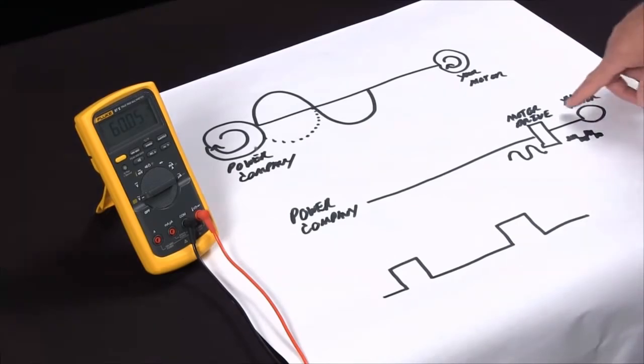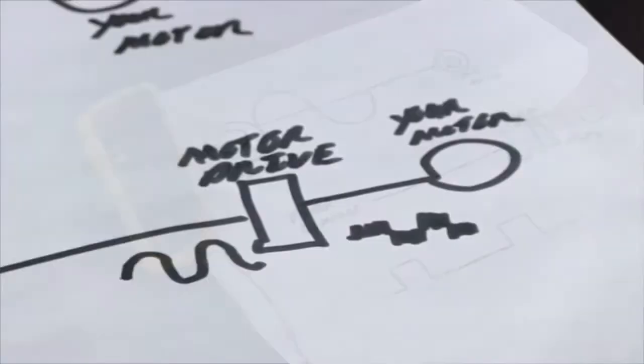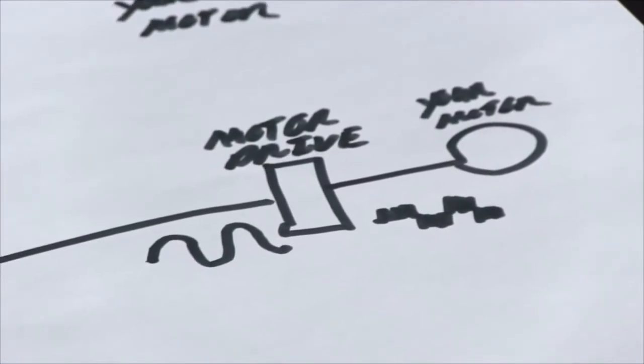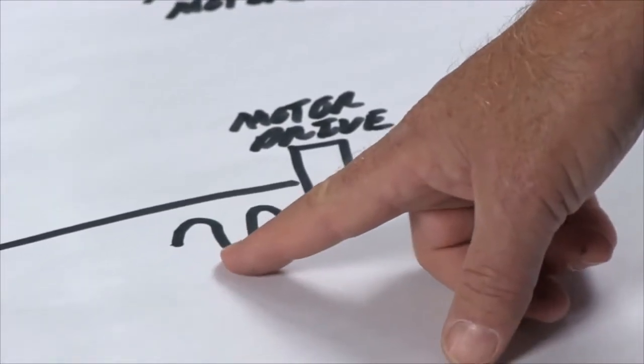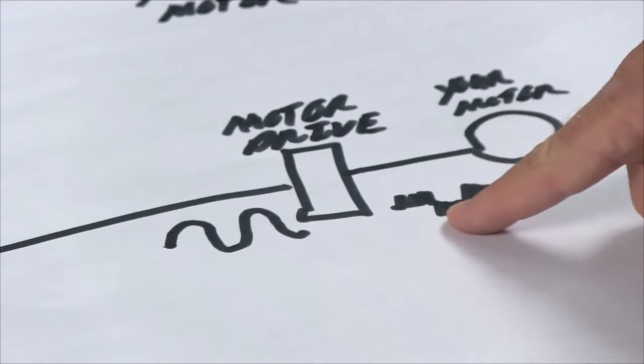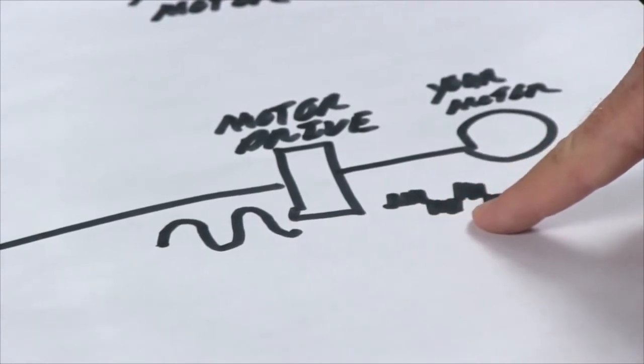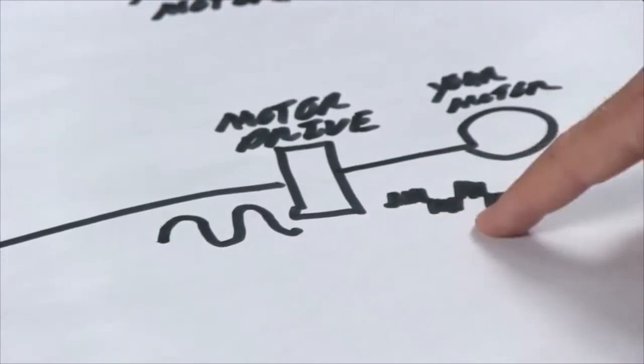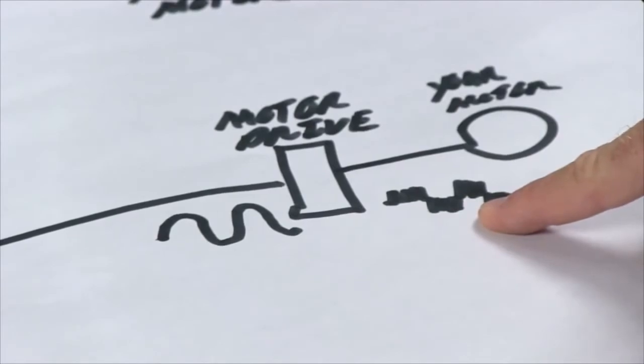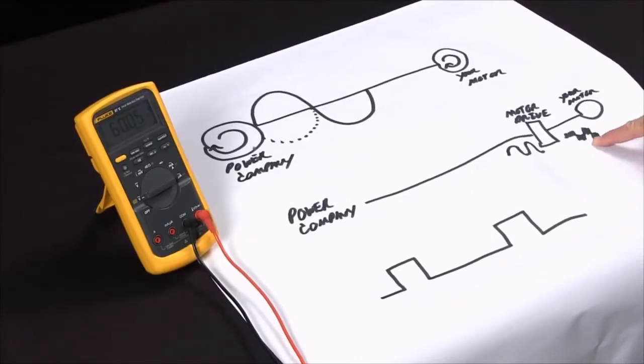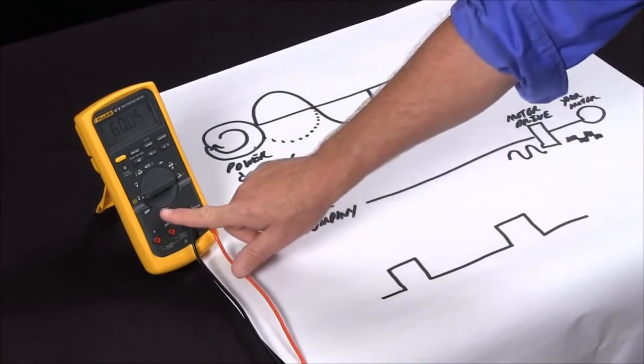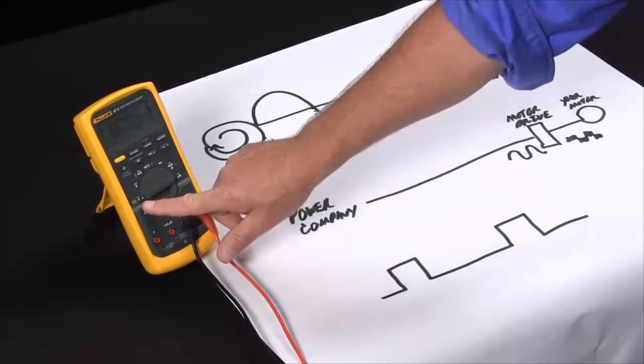Now, as you get more into working with motor drives, this measurement becomes a little bit more complex because the motor drive takes your normal sine wave and puts it into a pulse width modulated or a PWM signal. A normal multimeter is not going to be able to measure this frequency properly. We added a feature on the Fluke 87.5 and our 1587.